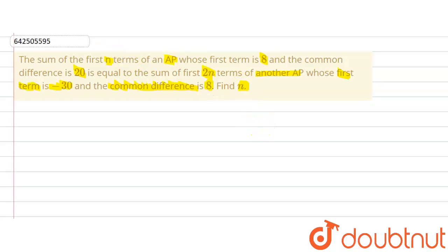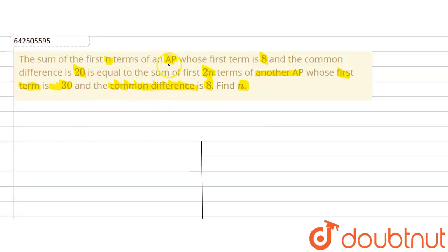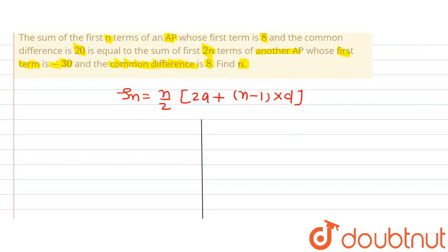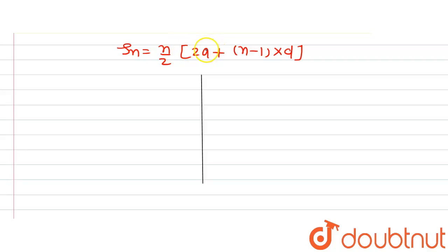We are given two APs such that the sum of first n terms of one AP is equal to the sum of first 2n terms of another AP. The formula we are going to use is: sum of n terms of an AP equals n divided by 2, times (2a + (n minus 1) times d), where n is the number of terms, a is the first term, and d is the common difference.